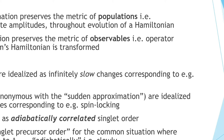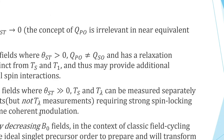An important concept is to think of this long-lived eigenorder, or QPO, as adiabatically correlated singlet order — the suitable singlet precursor order for the common situation where you have an initial chemical shift difference that you ramp down to roughly zero, approximately adiabatically. In the near-equivalence limit, there is no difference between long-lived eigenorder and singlet order. They're the same thing, and long-lived order can't possibly be better.